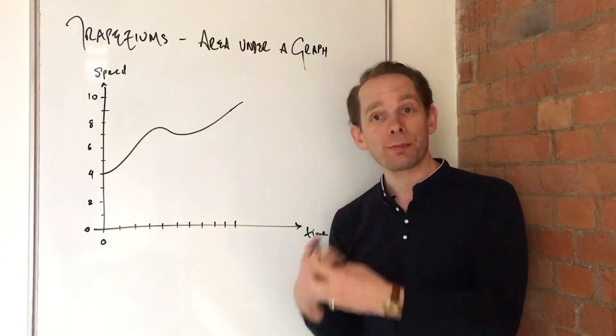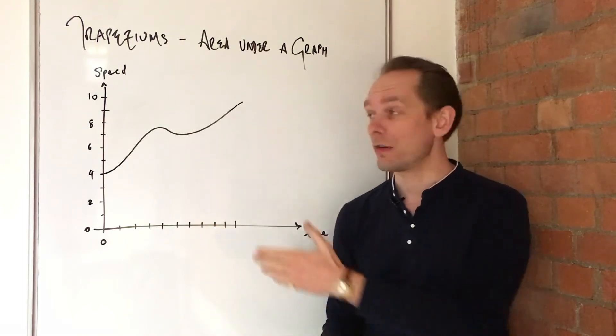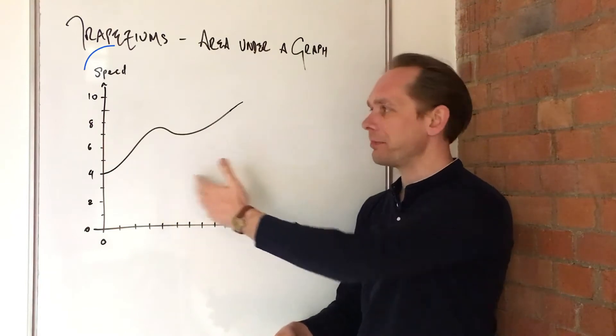Hello, this video is about using trapeziums to find the area under a complicated shape on a graph like this curve. So in my example here, I've got something where we're mapping an object's speed over time.